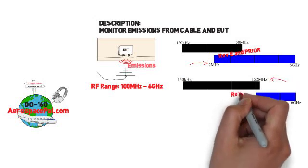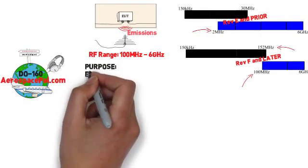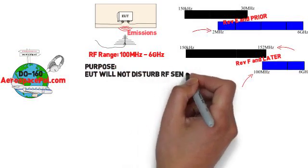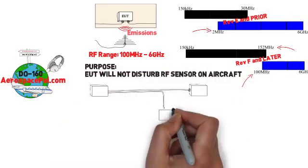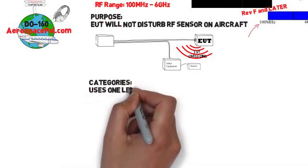This provides a slight and needed overlap. The purpose of radiated emissions is to ensure that you're not interfering with other RF sensors on the aircraft. For section 21, the category is one letter for both conducted emissions and radiated emissions.